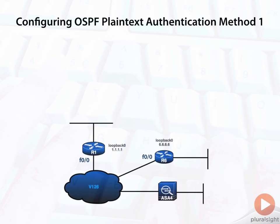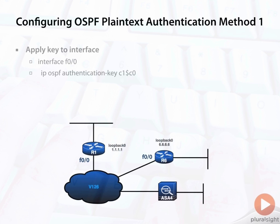This is how to configure OSPF plain text authentication using the first method, which is applying the authentication inside the routing process. The first step is to create the key on the interface — this is done on a per-interface basis. On interface F0/0, use the command: ip ospf authentication-key C1-CO. That applies the key.